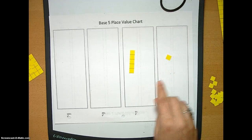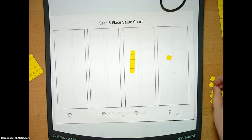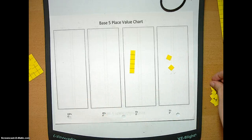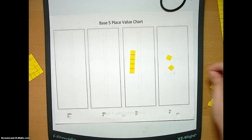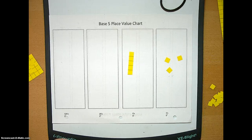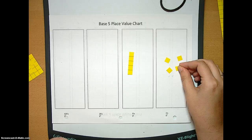So now we have one, one base five, one, two base five, one, three base five, one, four base five.